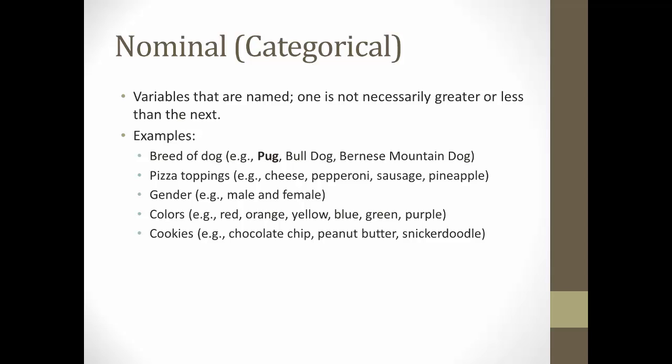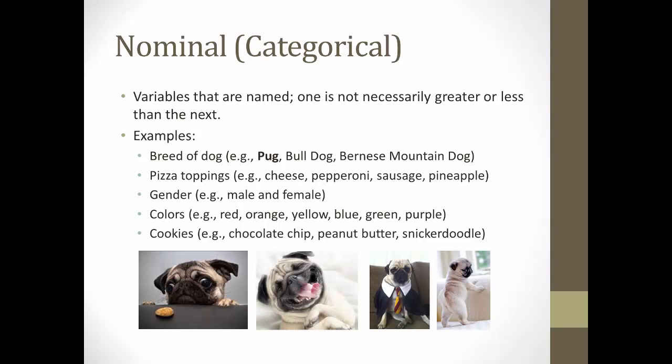If you notice, these things are just named. A pug is not necessarily better than a Bernese Mountain Dog. Red is not necessarily better than purple. Chocolate chip cookies are not necessarily better than snickerdoodles. Although, you know, everyone has their favorites. But as far as measuring goes, we cannot say that females are better than males or pepperoni is better than sausage. It doesn't make sense to say things like that. So a nominal variable is a variable that's just named.